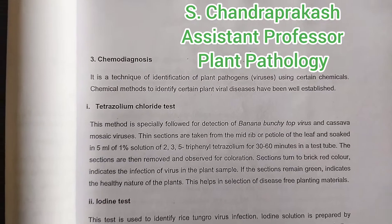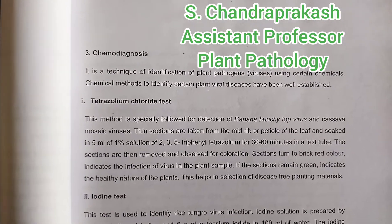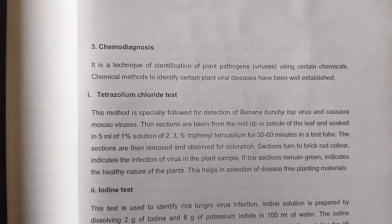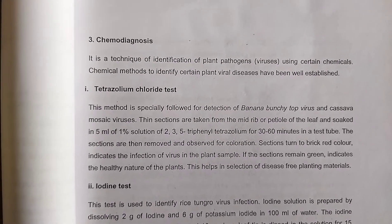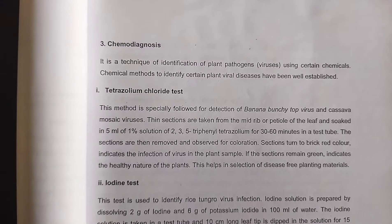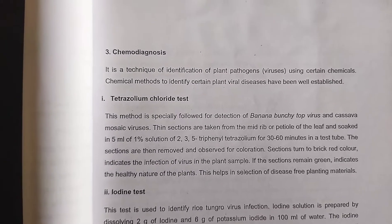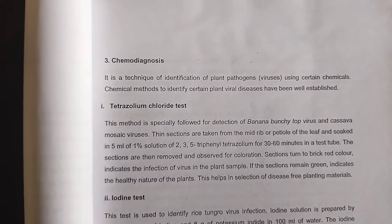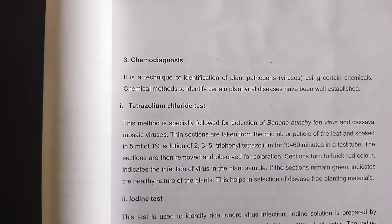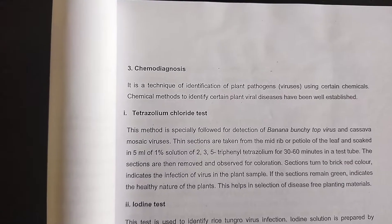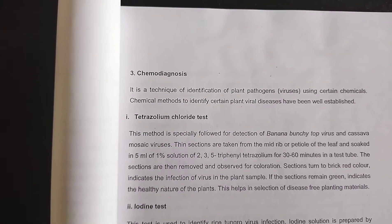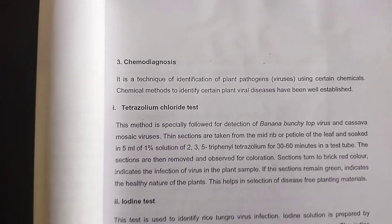Good morning. In this video we will study about chemo diagnosis of plant diseases. Chemo diagnosis is mainly used to diagnose viral diseases. We have to diagnose the disease before it produces symptoms, or prior to symptom production, so that we can prevent the disease or prevent the spread of disease.